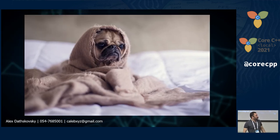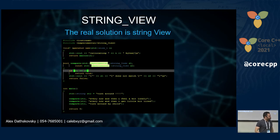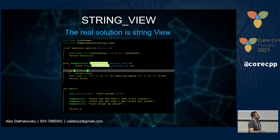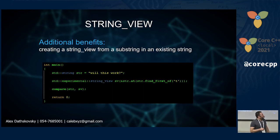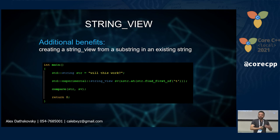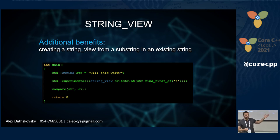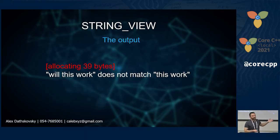The real solution is string_view. Using the same compare function but with string_view parameters, only 41 bytes are allocated for the first actual string — everything else is free. As another benefit, taking a substring from a string using find_first_at on a string_view does not allocate a new string, while doing the same on a regular string creates another allocation. With string_view, only 39 bytes allocated for the first string and that's it.